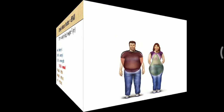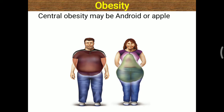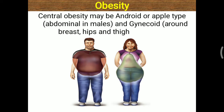Obesity is also categorized into two different varieties: central obesity, also called android or apple type, which is abdominal in males; and gynecoid obesity, which is around the breasts, hips, and thighs in women.